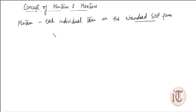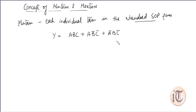Suppose y = abc + a̅bc̅ + ābc̅. This is a SOP form because each term is a product and we take the sum of these products. This is also a standard SOP form because the output function has literals a, b, c — all three literals are present in each product term. Each individual term in this standard SOP form is represented by the concept of min term.